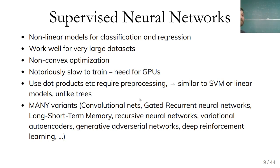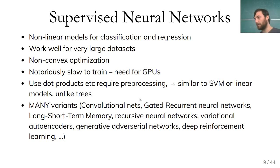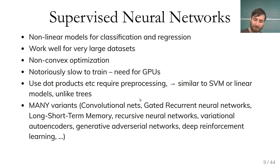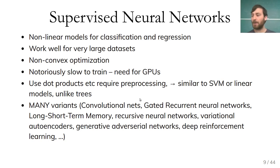Recently, generative adversarial networks have gotten a lot of press — creating very complex generative models where people generate images from nothing, like generating a new face. Reinforcement learning has also gotten attention, being used to play games. It was used to make computers better than humans at Go by a large margin, and StarCraft is close to human level. Deep reinforcement learning is solving many complex problems in restricted domains, but we won't talk about any of this.